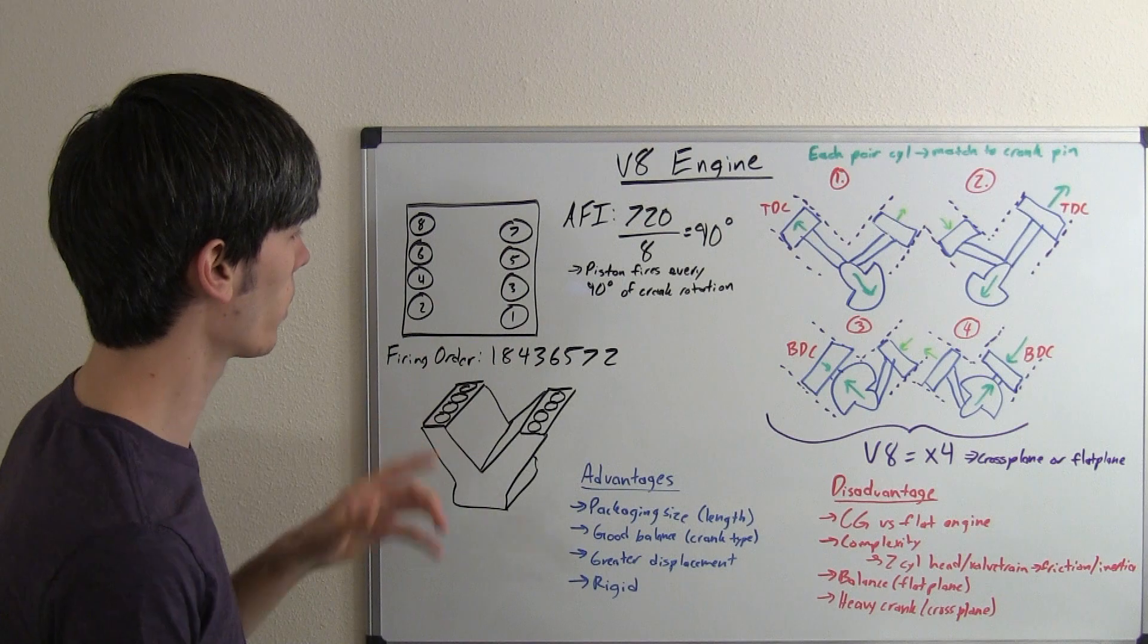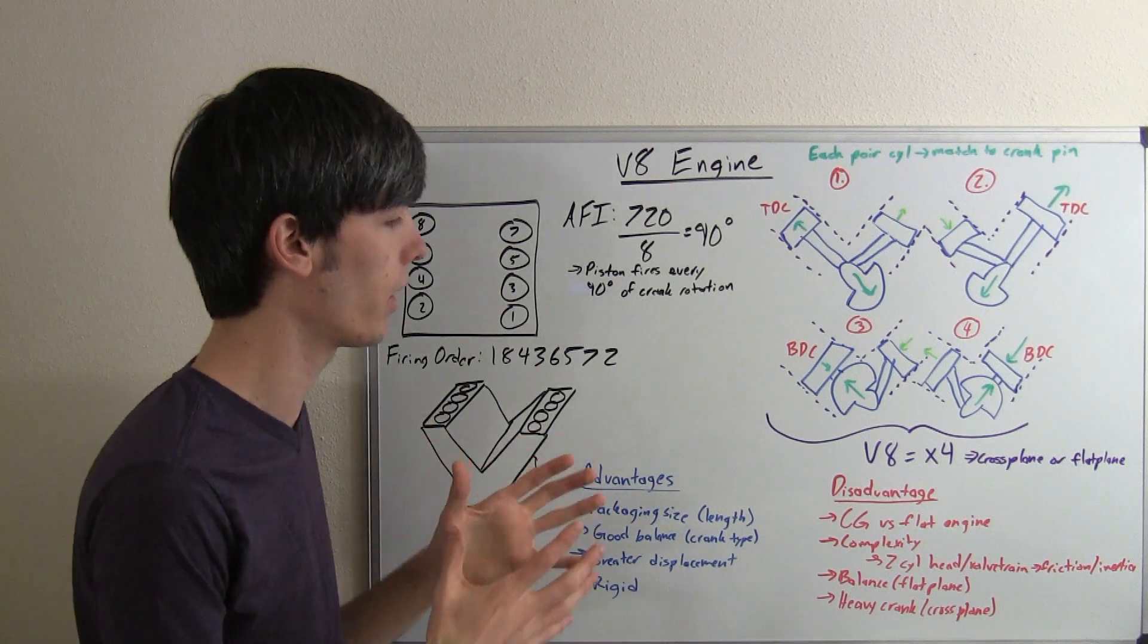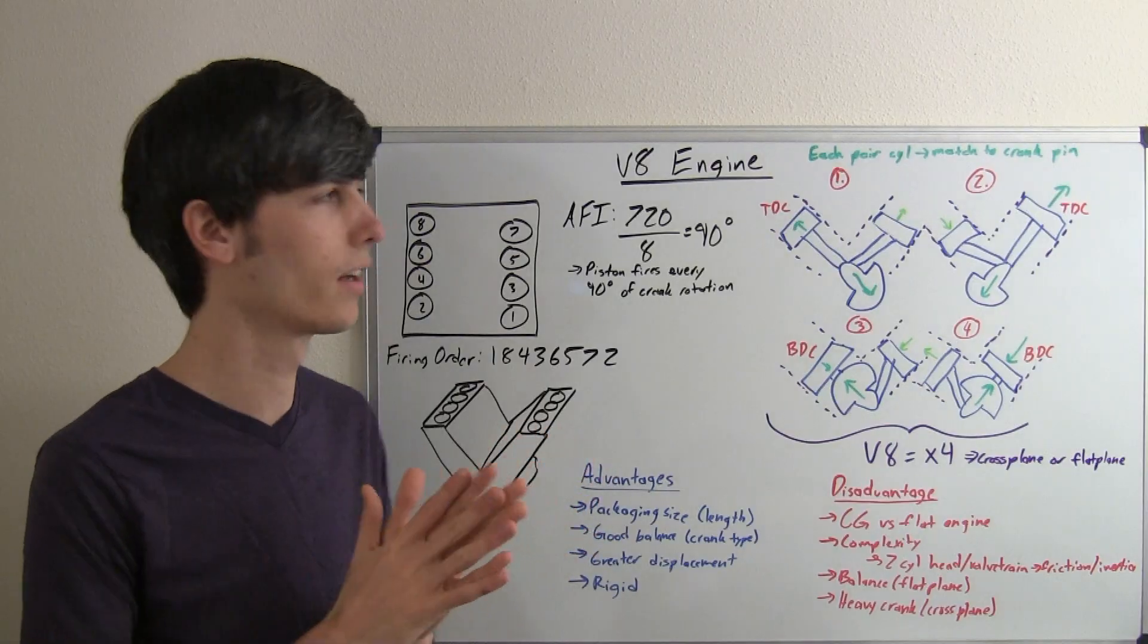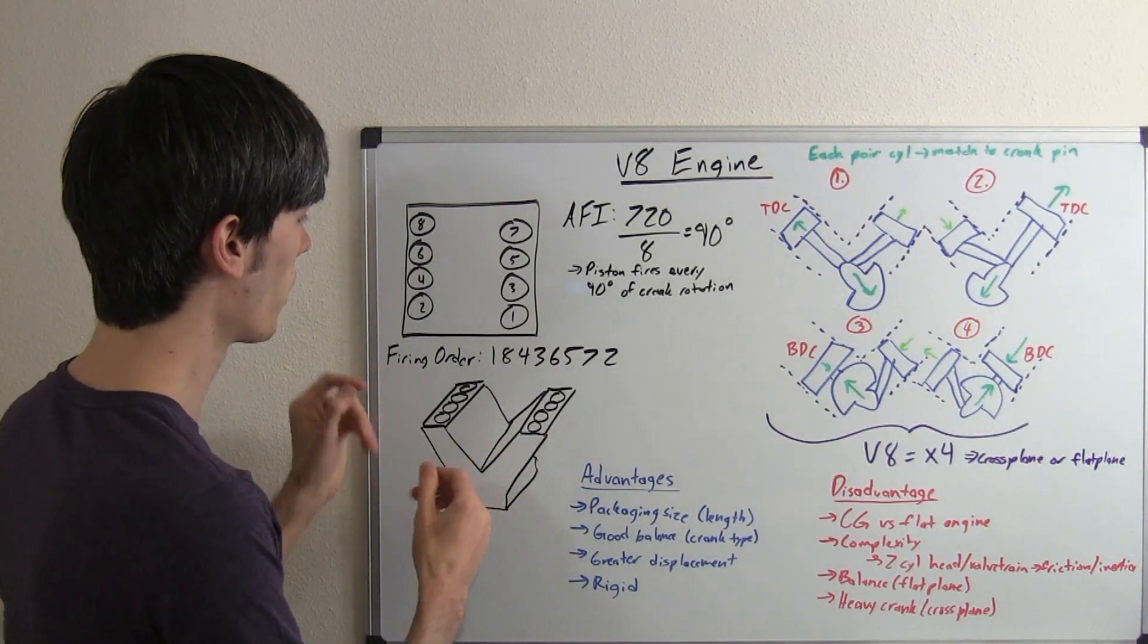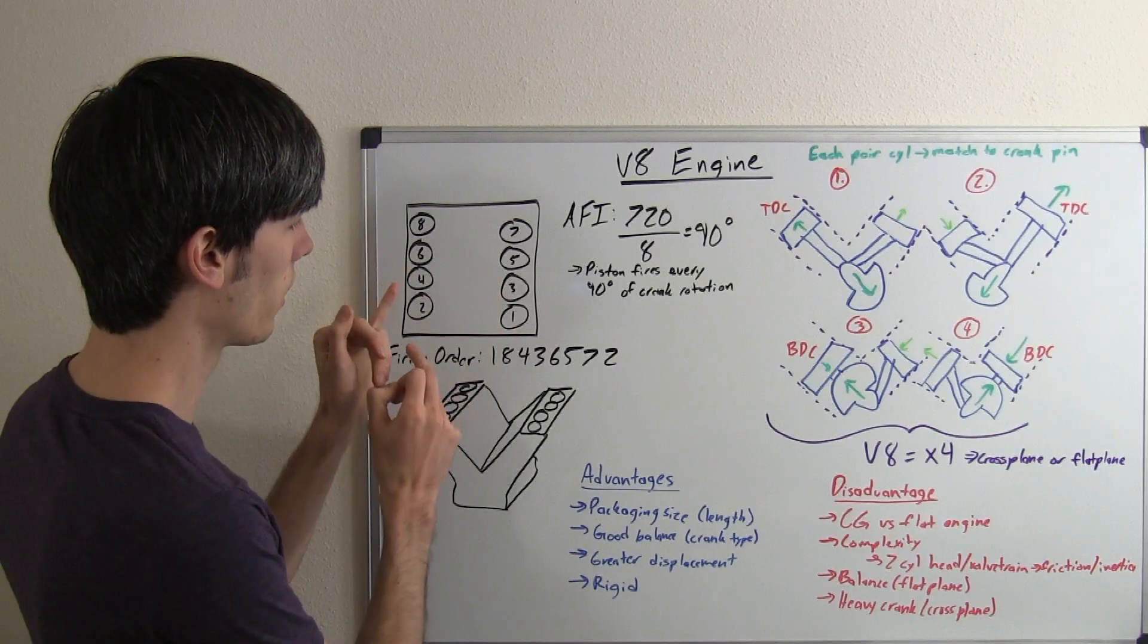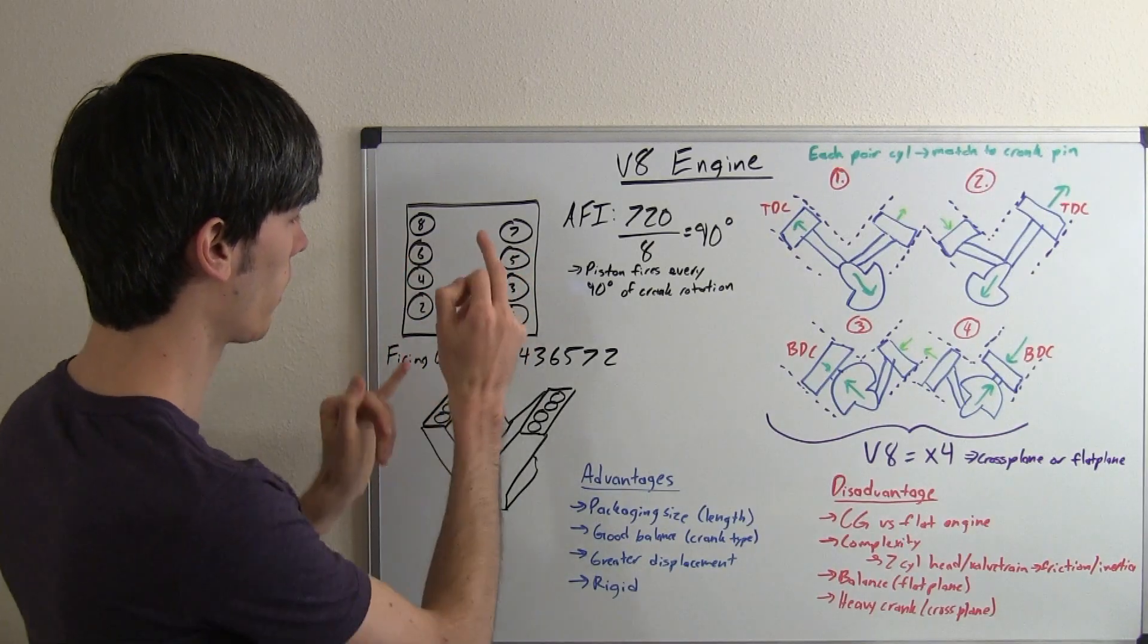Now, the firing order, in this case I'm going to be talking about a cross-plane V8. And I'm going to get more into detail on that in a later video. But basically, firing interval for this is going to be 1, 8, 4, 3, 6, 5, and then 2, 7.